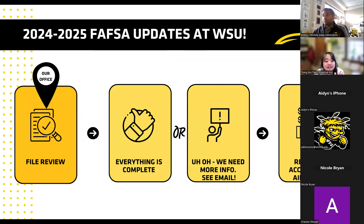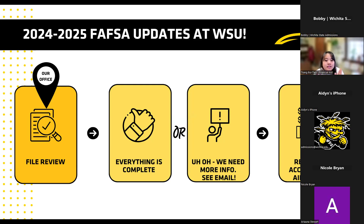Right now in the financial aid process, we have started to receive your FAFSA. If you've done your FAFSA in January, February, March, and now we're in mid-April, if you've done it and it's been submitted, we have received it here at Wichita State. Our next step is that we're going to start reviewing all of the files and making sure it looks good and is completed. If you still need to fill out more things from the Department of Education or we need more information, we'll reach out to you. If everything is complete and good, you will receive your financial aid offer.